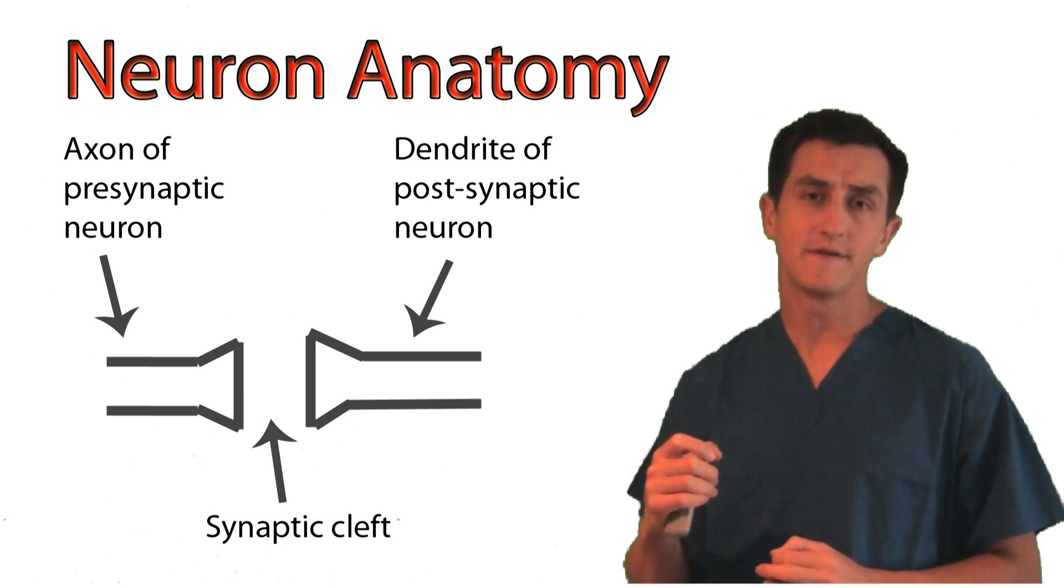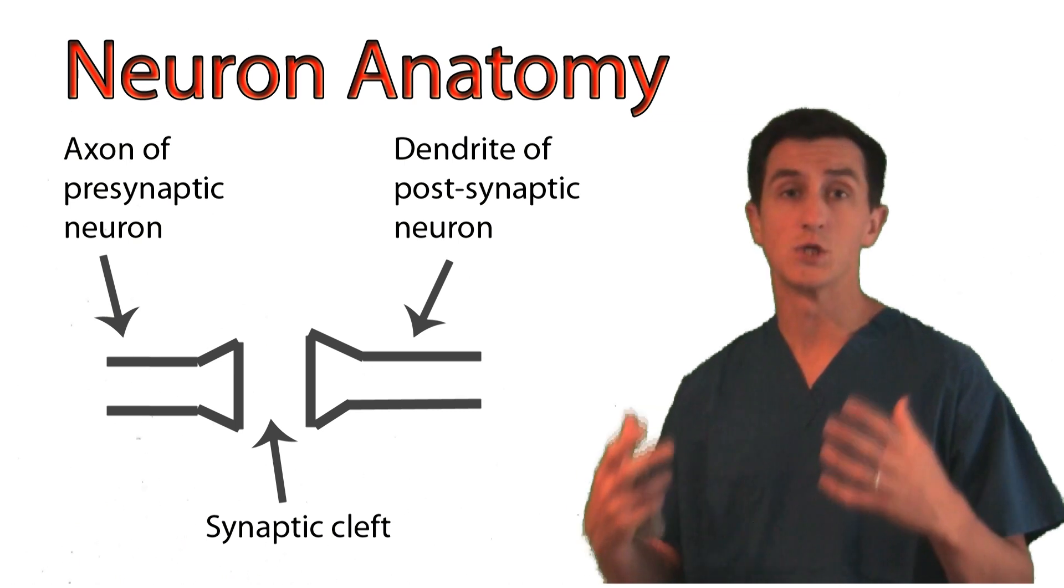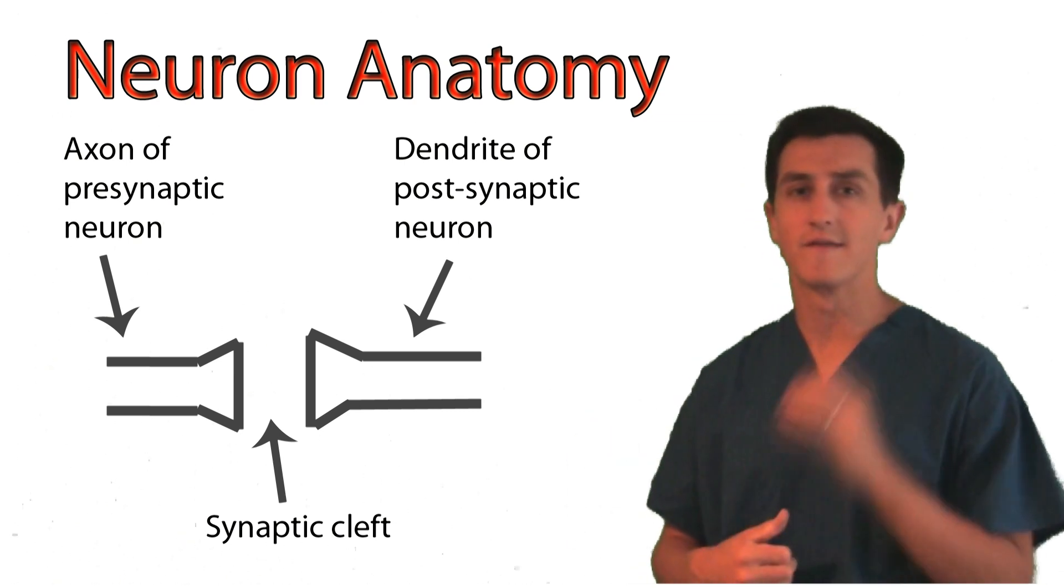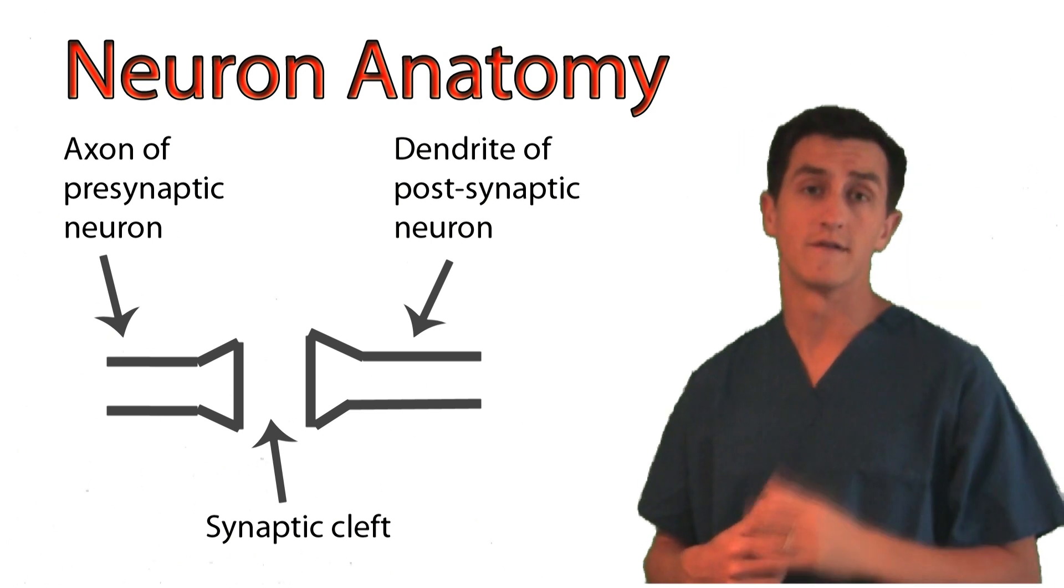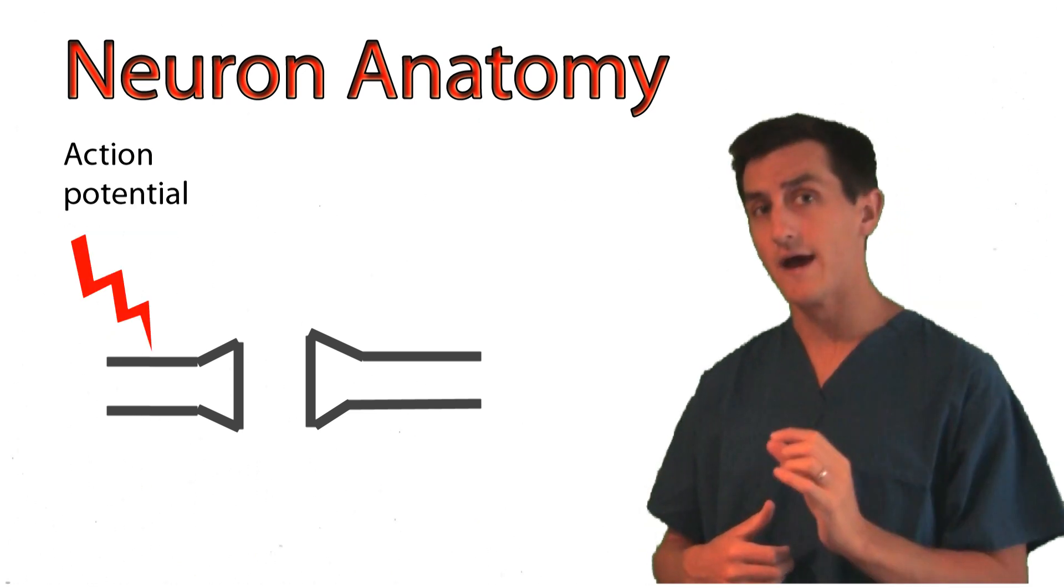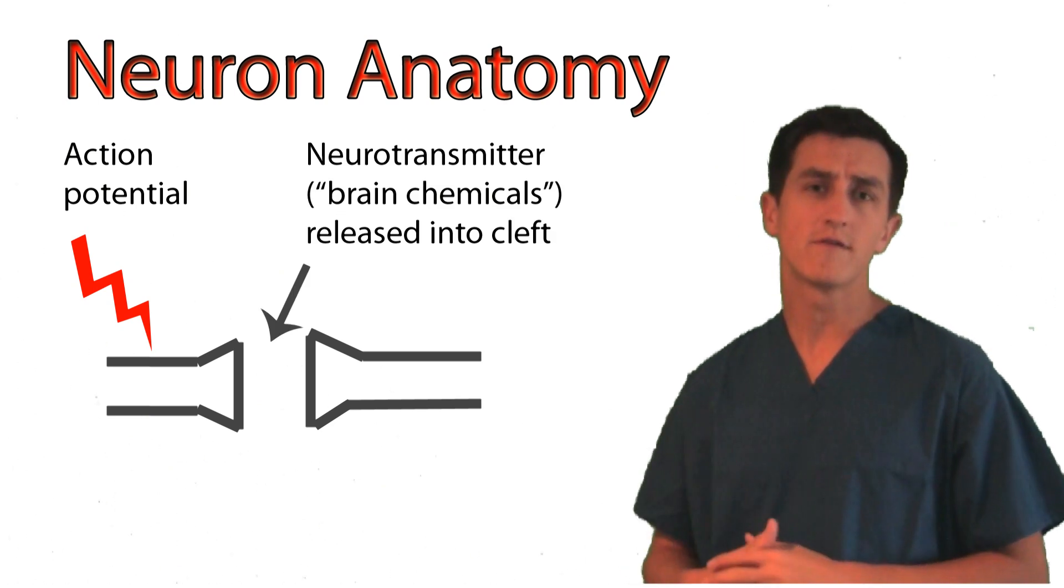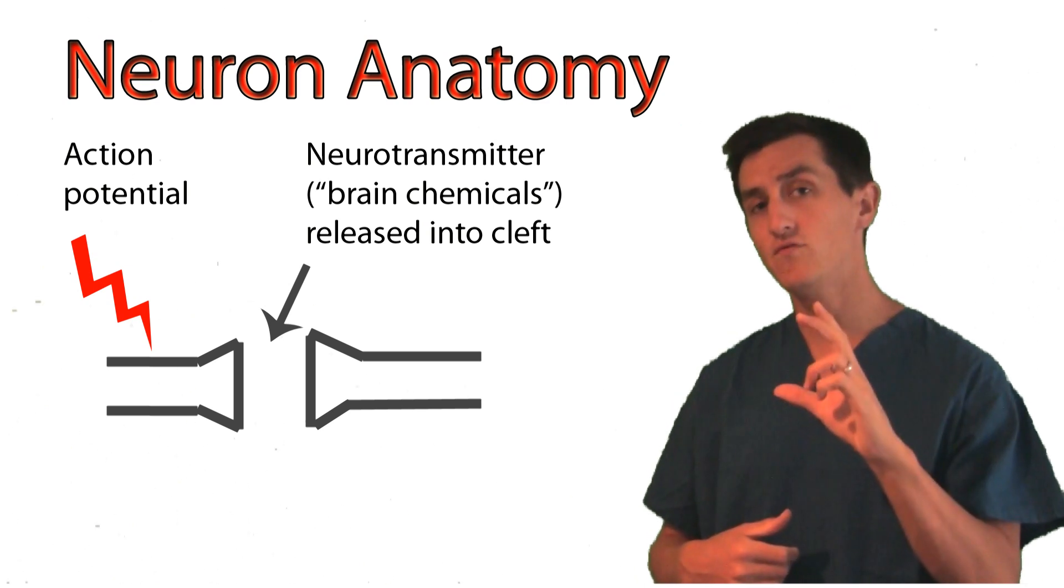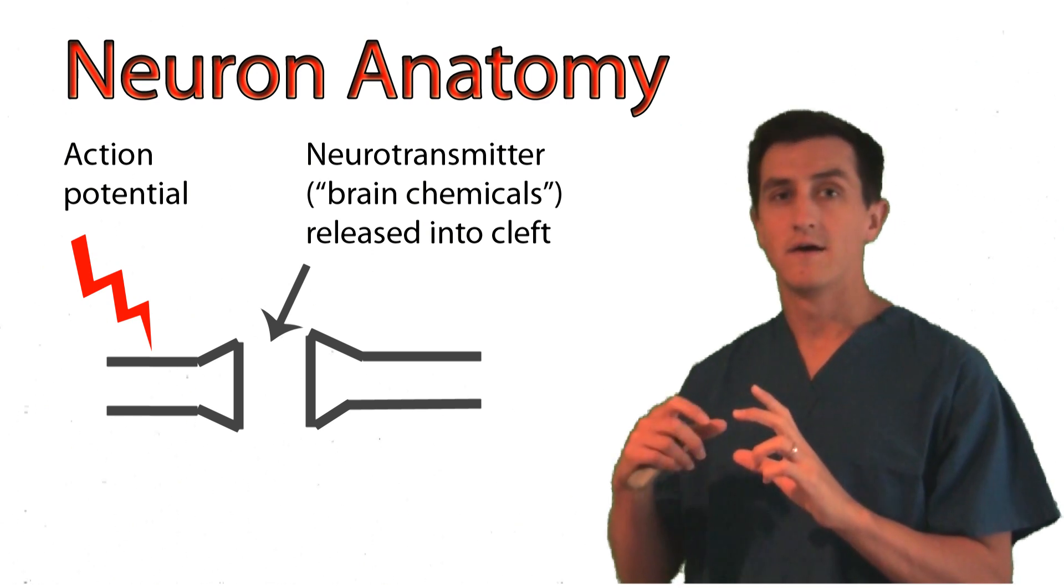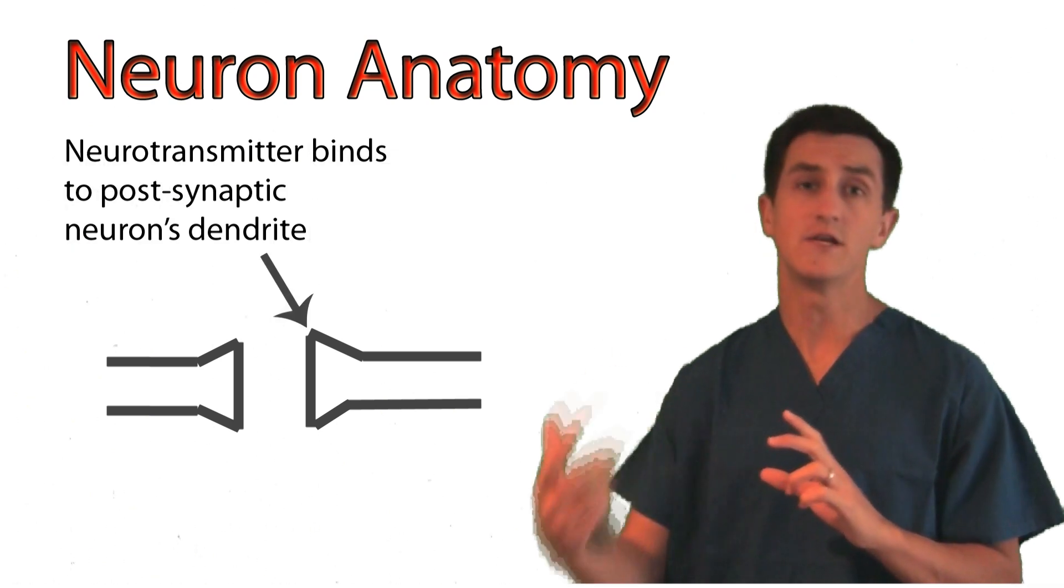The synaptic cleft is the point where all the magic of neuronal communication occurs. What happens is the axon, after receiving an electrical impulse known as an action potential, comes down and releases neurotransmitter into the synaptic cleft. Neurotransmitters can be various chemicals in the brain that ultimately diffuse across that space and bind to receptors on the postsynaptic neuron's dendrites.